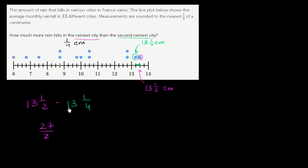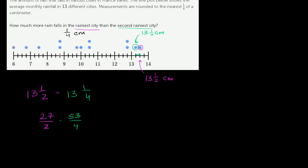And then we could say minus, see, 4 times 13 is 52, plus 1 is 53. So minus 53 over 4. And then in order to do the subtraction, you have to have the same denominator.